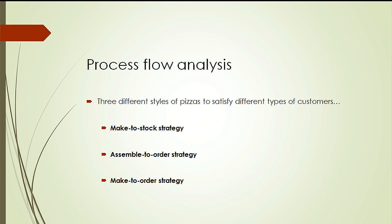Let's look at an example with pizzas. First, cheese pizzas made with standard ingredients and standard crust are the most popular items, made ahead of time to ensure they are always available upon demand — this is the make-to-stock strategy. Second, pizzas that use a standard crust prepared ahead of time but assembled based on specific customer requests — this is the assemble-to-order strategy. Lastly, pizzas made to order based on specific customer requirements, allowing for different types of crust and toppings — this is the make-to-order strategy.